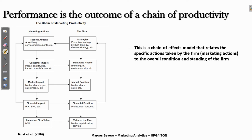Another important thing about performance is that it is the outcome of a chain of productivity inside firms. This is a theoretical model by Russ and colleagues in 2004, published in Journal of Marketing. They show a chain-of-effects model that relates the specific actions taken by the firm to the overall condition and standing of the firm. Everything starts with the firm's strategies — a general promotion, product, and channel strategy — and marketing provides the tactical actions that put this into operation inside the organization. This will have an impact on customer-related measures like attitude and satisfaction, which are the main inputs of brand equity, ultimately producing a market impact, a financial impact, and an impact on firm value.